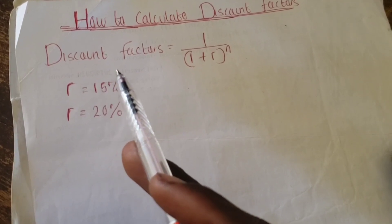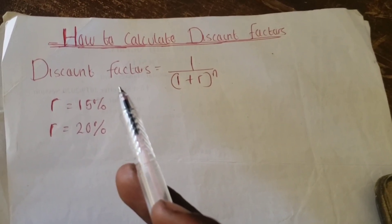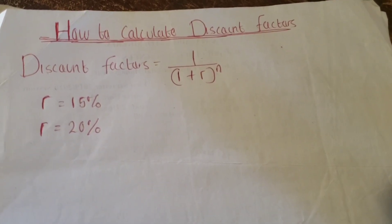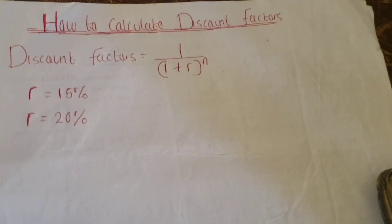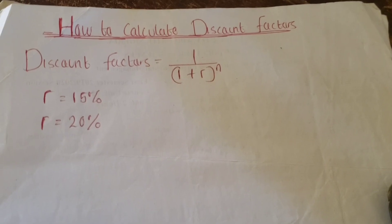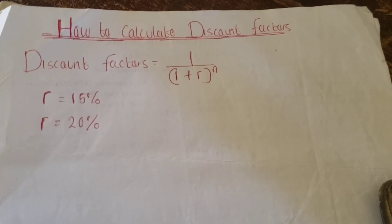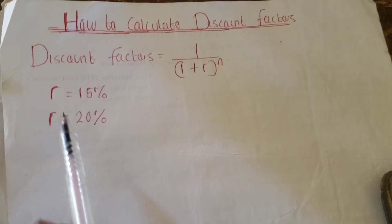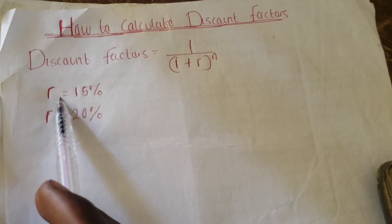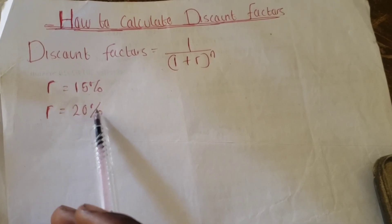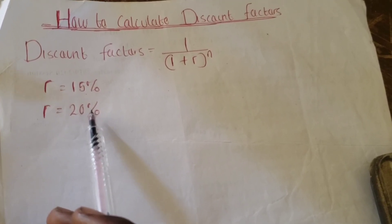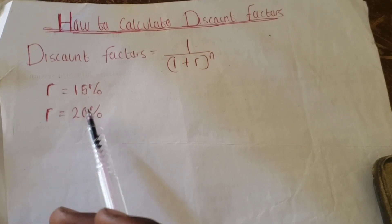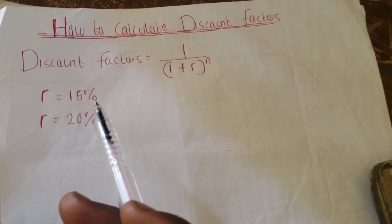The years for project A and B are from our previous class. If you missed the first class, you can check the link in the description of this video to watch it, so that you will not feel lost as we progress in this calculation. The rate we use is 15, and the rate we used to determine the internal rate of return is 20. Now we want to determine the discount factors using the formula.